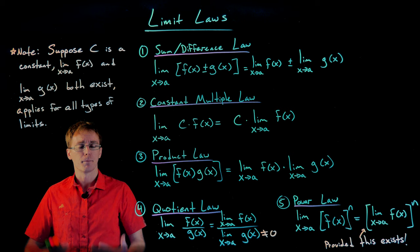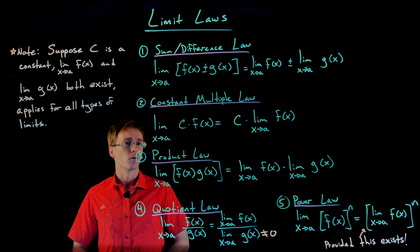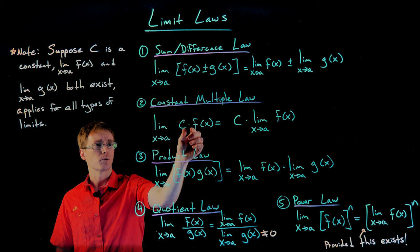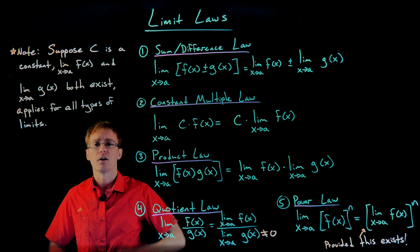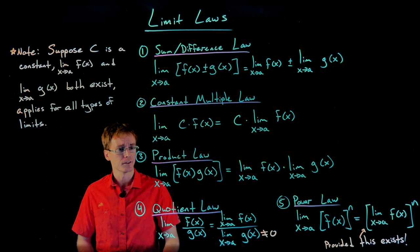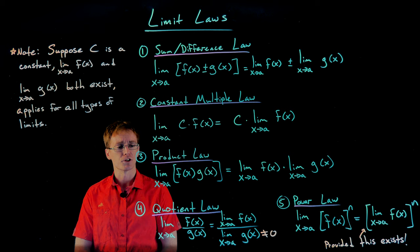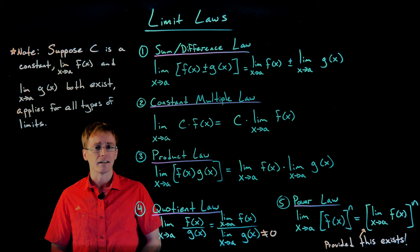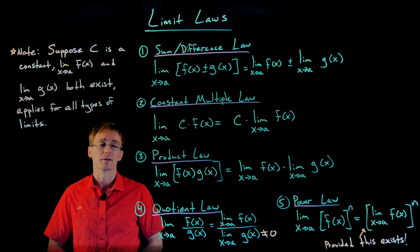The constant multiple law says the limit as x approaches a of a constant times a function is equivalent to the constant times the limit of the function. So this allows us to pull constants out of our limits or bring a constant inside. The product law deals with taking the limit of a product of two functions: the limit as x approaches a of f times g can be written as the limit of the first factor times the limit of the second factor — treating it piece by piece and putting the pieces back together through multiplication.